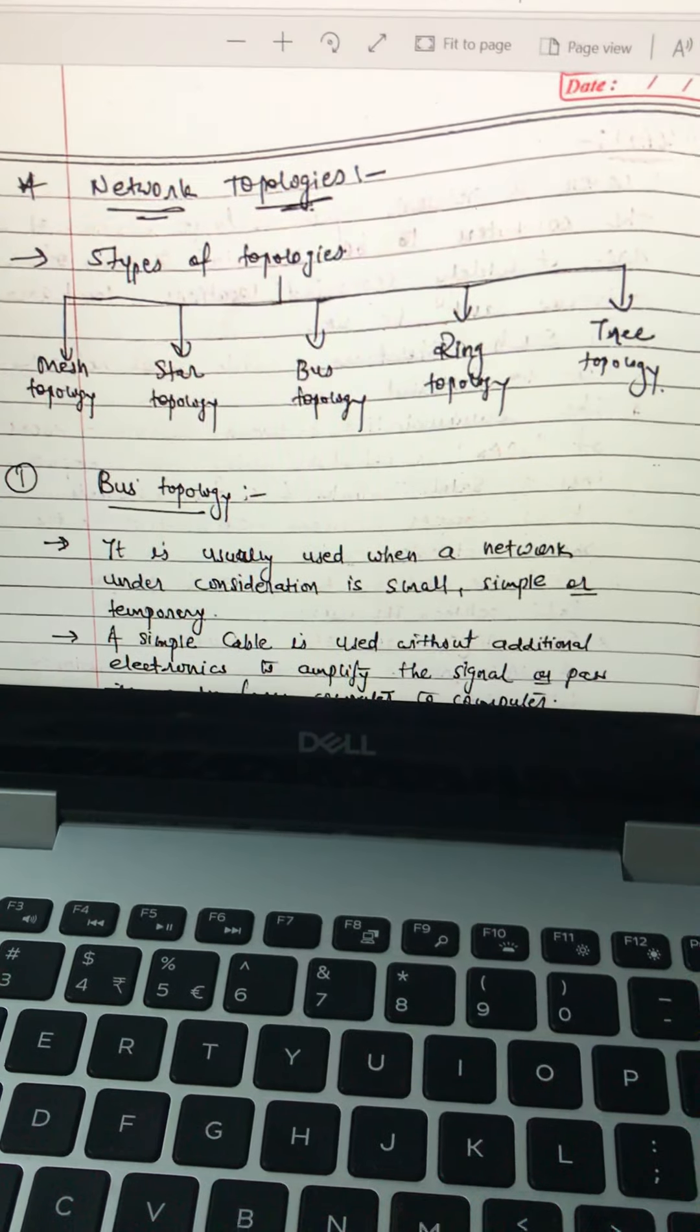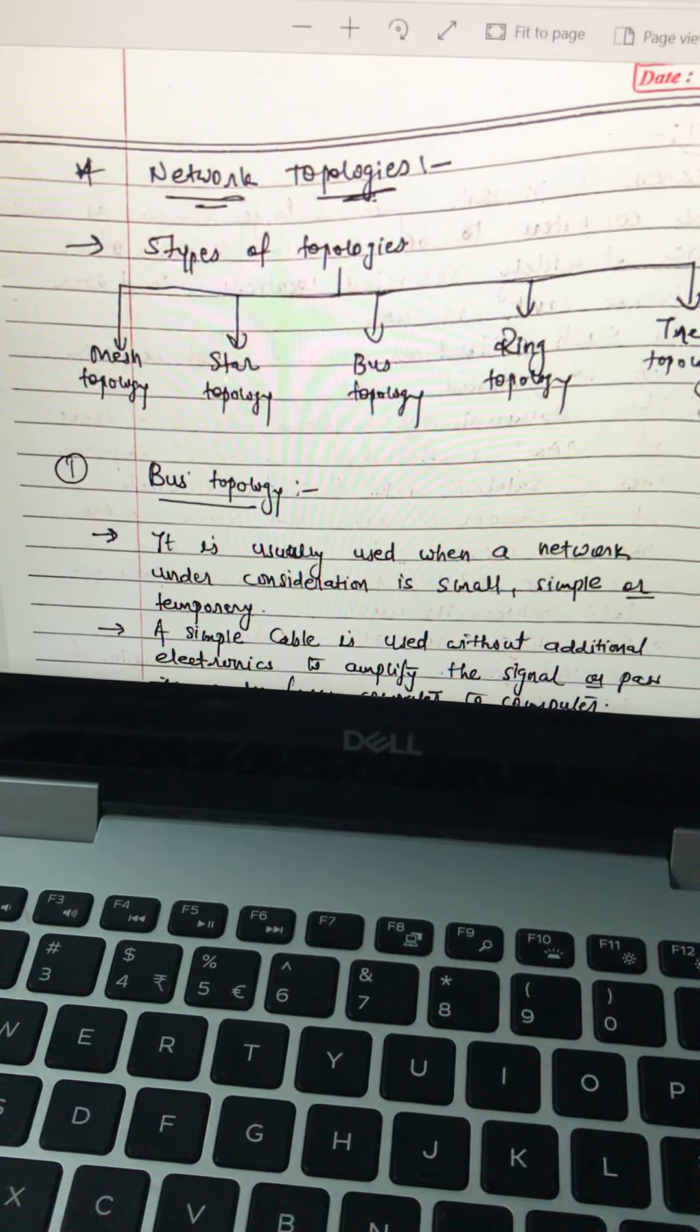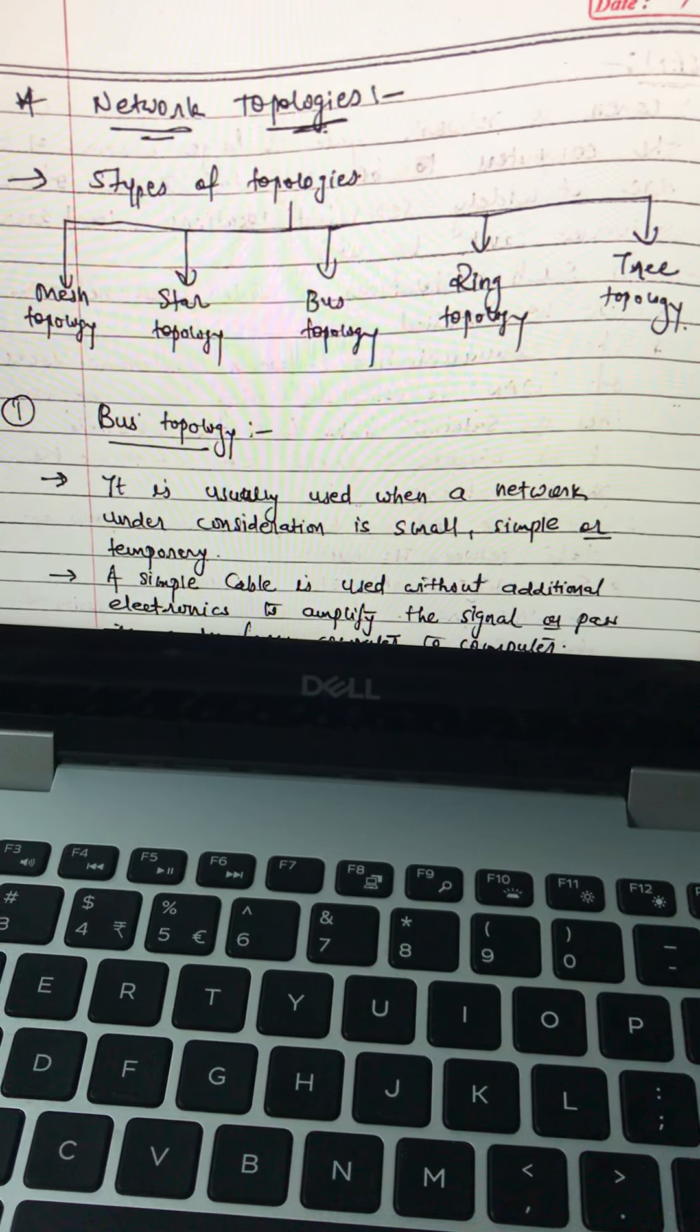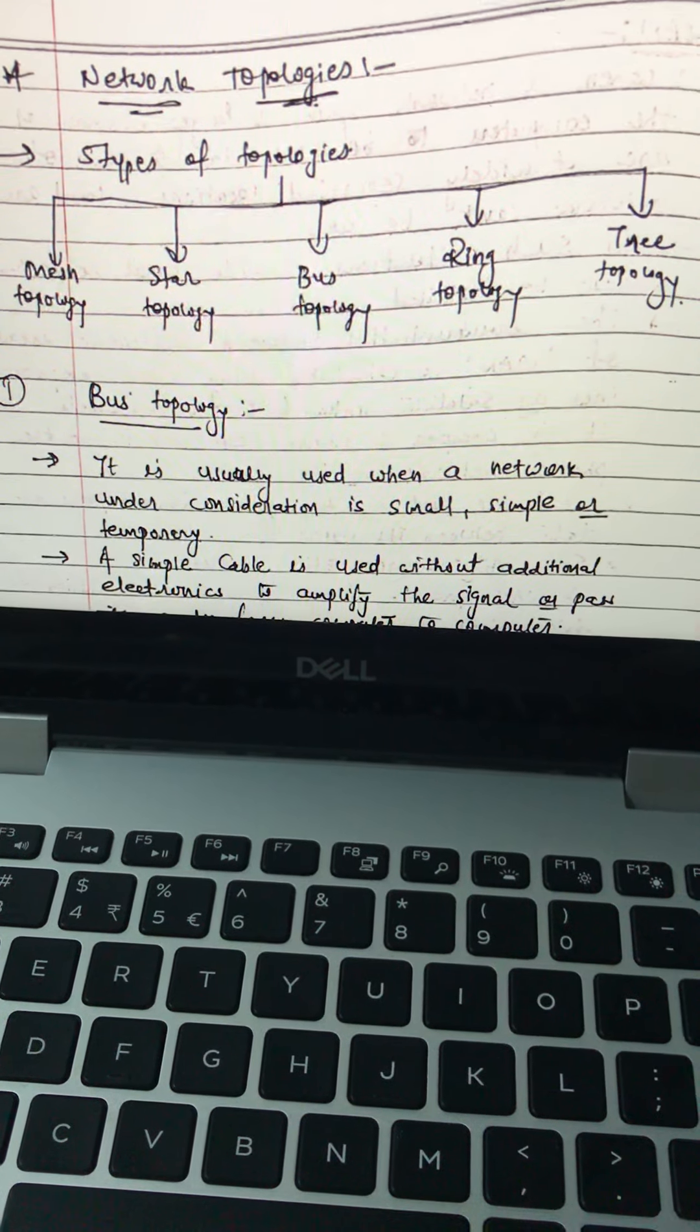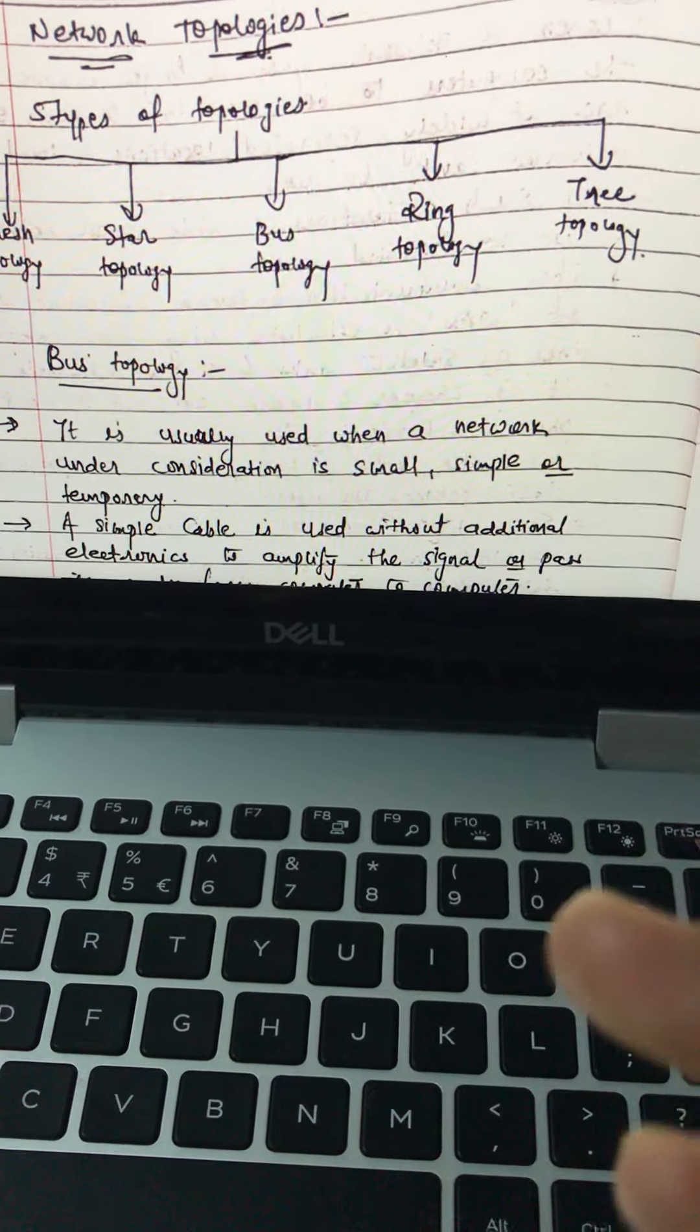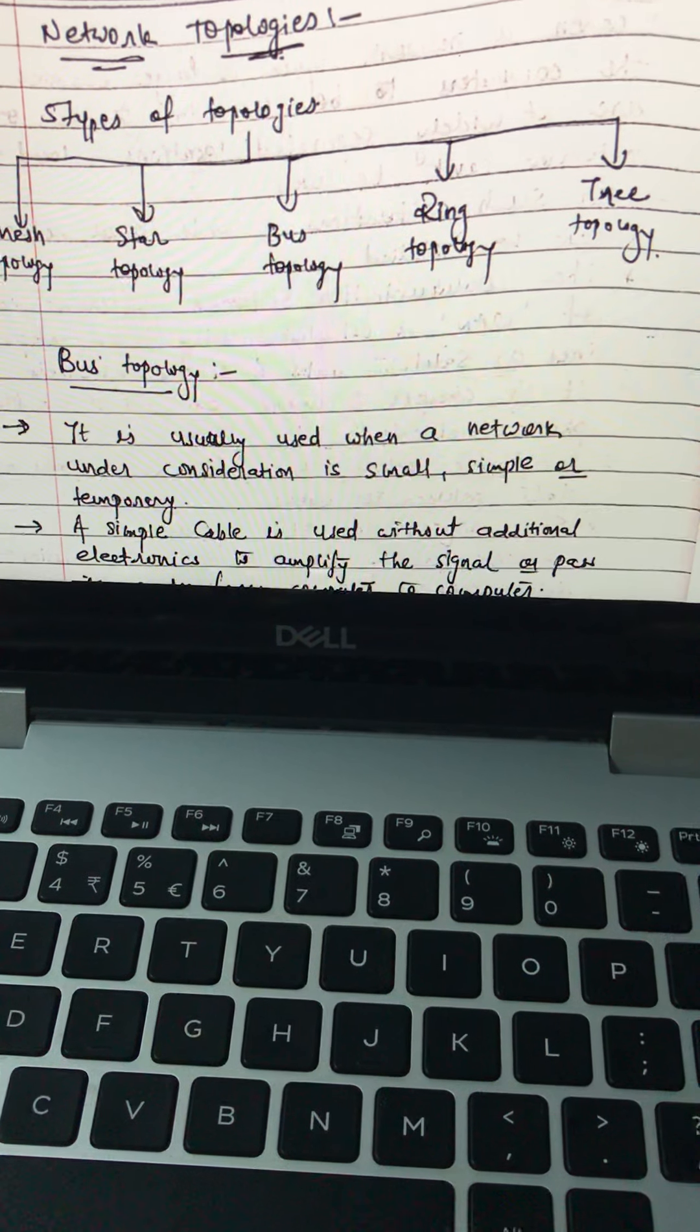Hello all. So in today's lecture we are going to understand about network topologies. There are five types of network topologies: mesh, star, bus, ring, and tree. These topologies are used for LAN connection, that means local area network.